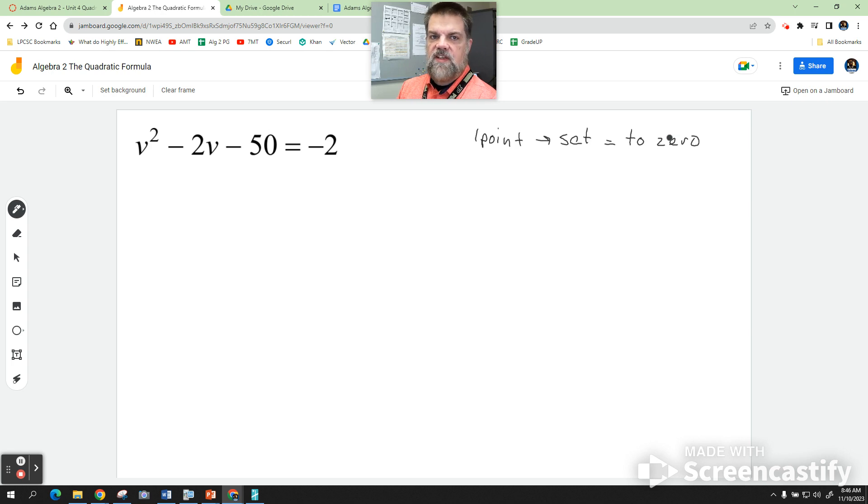I'm going to add two to both sides on this one. Two minus two is zero, then this becomes negative 48, and then this becomes everything else is the same: v squared minus 2v. That's one point, making sure that it's equal to zero.